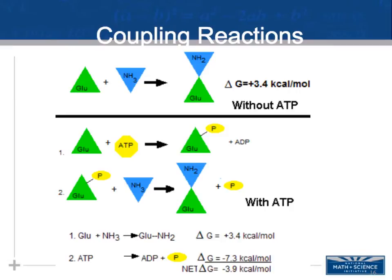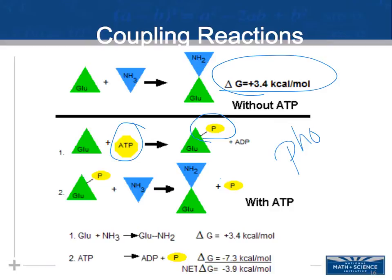For example, coupling glutamine with an ammonia group — an endergonic reaction requiring energy input — with the transfer of a phosphate from ATP. This process called phosphorylation adds a phosphate to something else. When I phosphorylate that glutamine, the transfer of energy results in an overall favorable reaction with a negative enthalpy, making it overall exergonic. Think of photosynthesis as endergonic — it requires absorption of energy from the sun — and cellular respiration as overall exergonic.